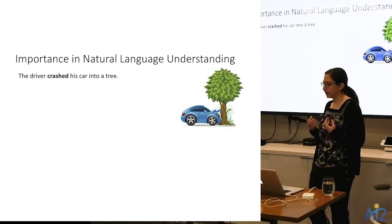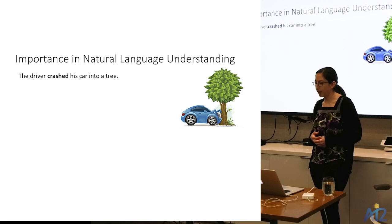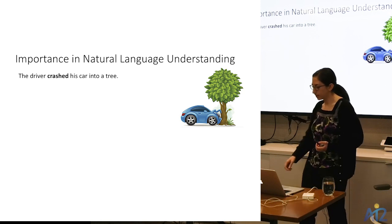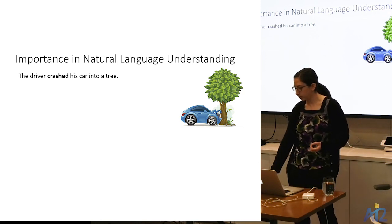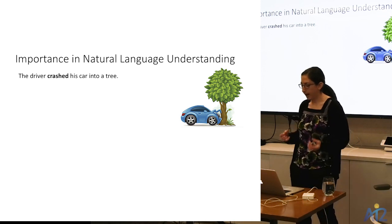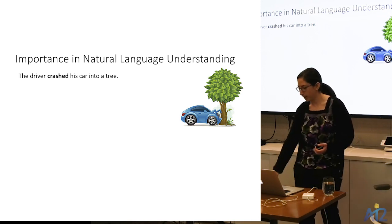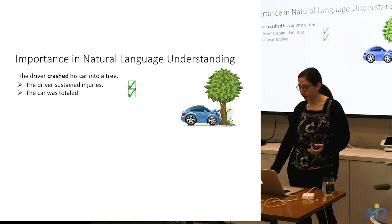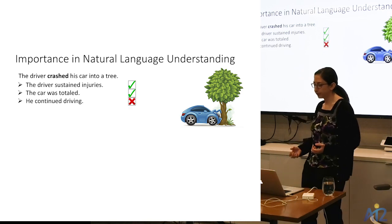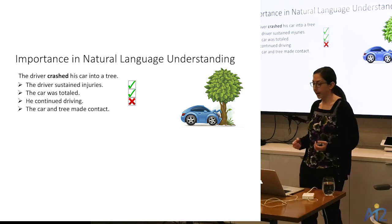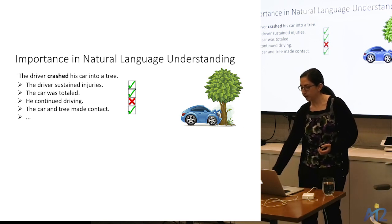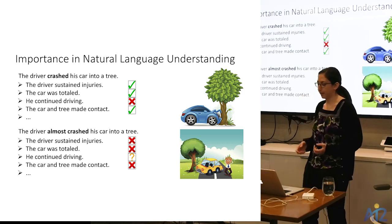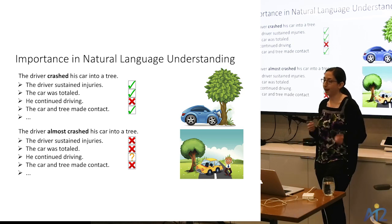More generally, event factuality is integral to language understanding — we can't make certain inferences about situations without knowing whether particular events happened. For example, 'the driver crashed his car into a tree' leads a human to infer the driver sustained injuries, the car was totaled, and the car and tree made contact. But 'the driver almost crashed his car into the tree' yields a very different set of inferences based on whether the crashing event actually happened.